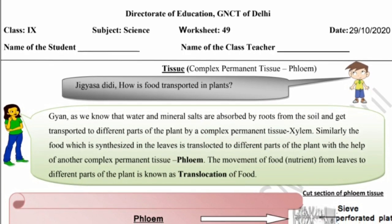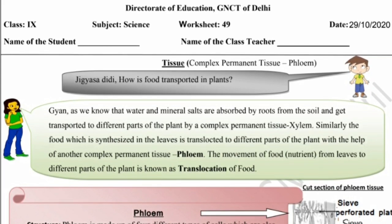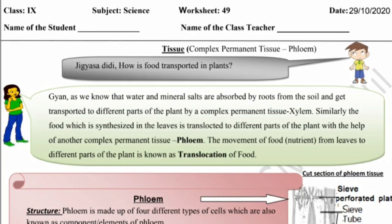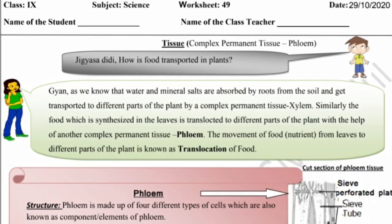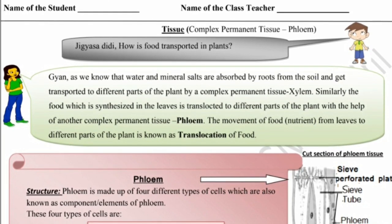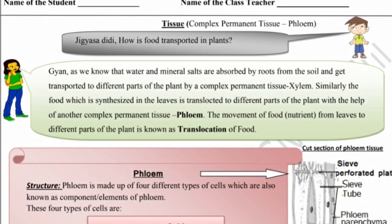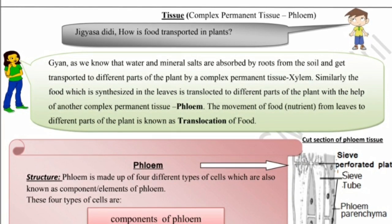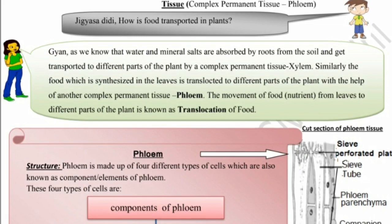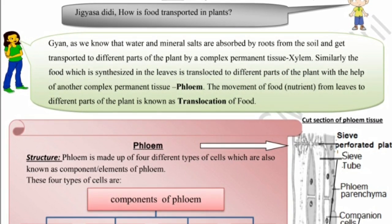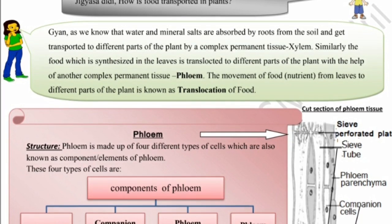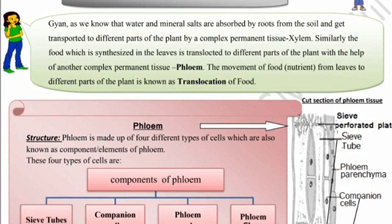How is food transported in plants? As we know, water and mineral salts are absorbed by roots from the soil and transported to different parts of the plant by a complex permanent tissue, xylem. Similarly, the food which is synthesized in the leaves is translocated to different parts of plants with the help of another complex permanent tissue, phloem. The movement of food from leaves to different parts of the plant is known as translocation of food.